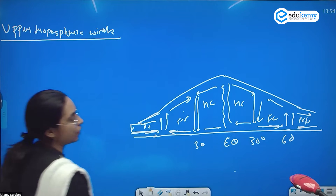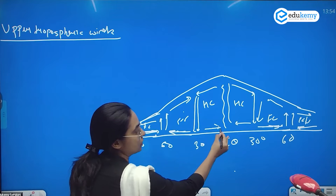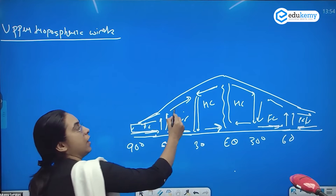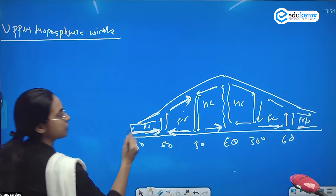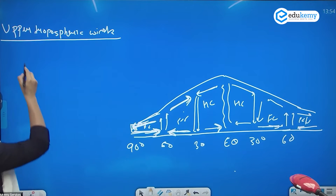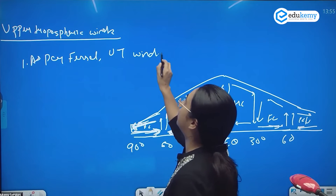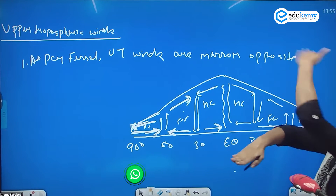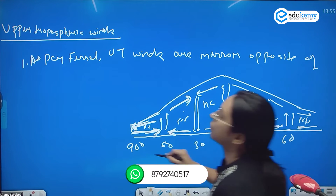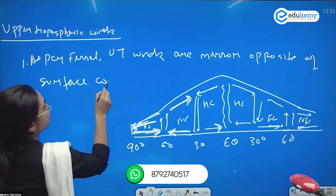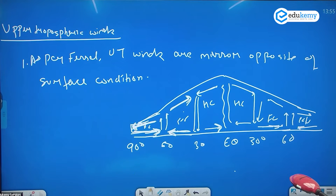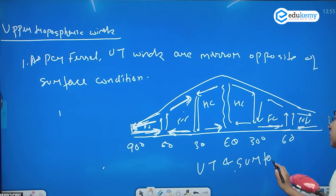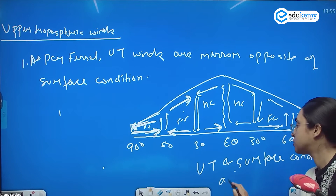What is Peril saying? Peril says that if at the equator we have wind blowing in one direction, at the upper tropopause we will have the opposite wind. Similarly at 30 degrees and at the poles, the upper tropospheric winds are the mirror opposite of the surface conditions.